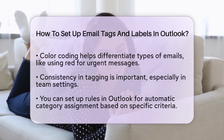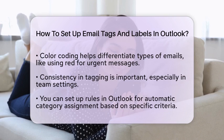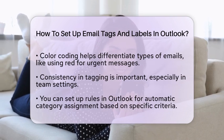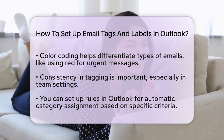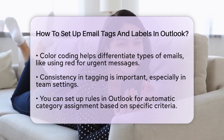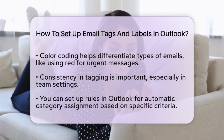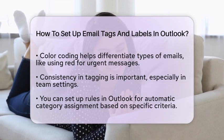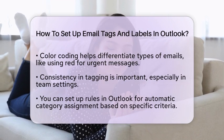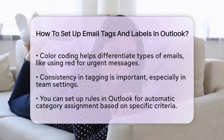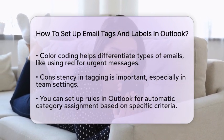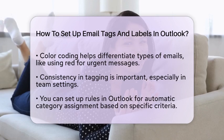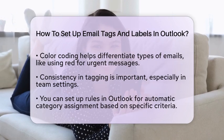Consistency is key when using tags. If you work in a team, having a uniform categorization scheme can help everyone stay on the same page. You can also set up rules in Outlook to automatically assign categories based on the sender, subject, or specific keywords. This automation saves you time and keeps your inbox organized.